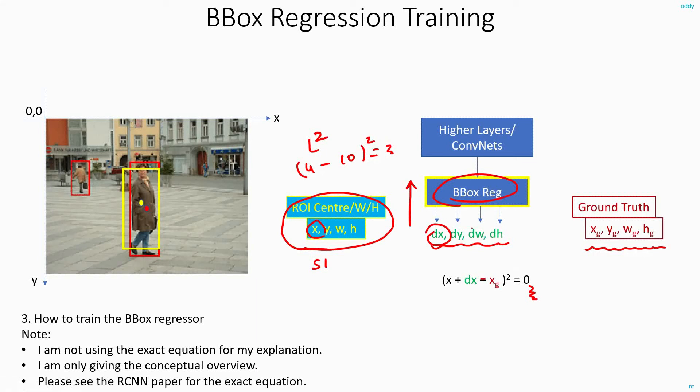Once you do it, your bounding box regressor in the next iteration will output some other values of dx, dy, dw, and dh. Then next you do the same operation. I forgot to mention, just like you did it for x, you have to do it for y, w, and h.